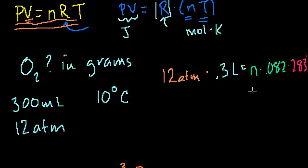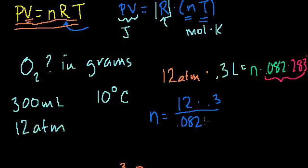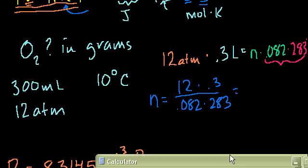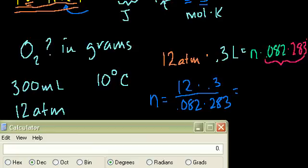All we have to do is solve for n. We just divide both sides of this equation. So we have n equals 12 atmospheres times 0.3 liters divided by 0.082 times 283 degrees. And our answer will be in moles. If you want to verify that, you can plug in all the units. So it's 12 times 0.3 divided by 0.082 divided by 283 equals 0.155 moles.